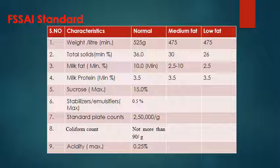Sucrose or sugar maximum 15%, stabilizer maximum 0.5%. Microbial count — standard plate count — is 250,000 per gram. Coliform count: not more than 90 per gram or ml. Acidity: maximum 0.25%.